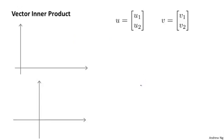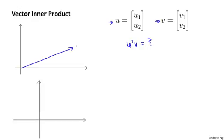In order to get started, let me first remind you of a couple of properties of what vector inner products look like. Let's say I have two vectors u and v — both two-dimensional vectors. Then let's see what u transpose v looks like. U transpose v is also called the inner product between the vectors u and v. U is a two-dimensional vector, so I can plot it on this figure. That's the vector u.